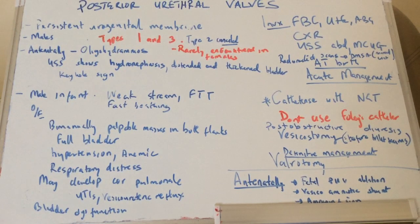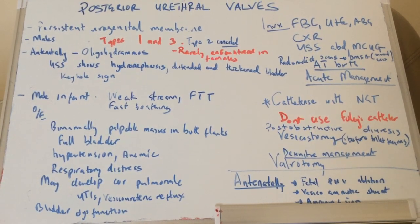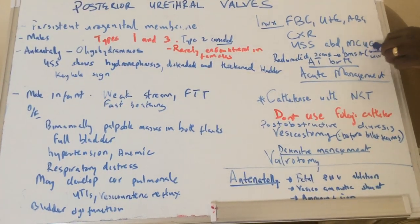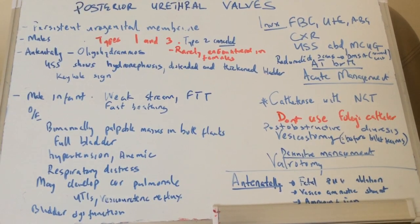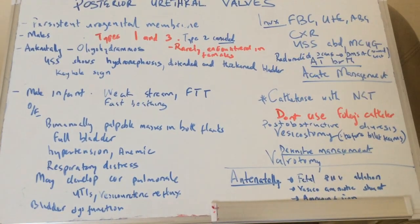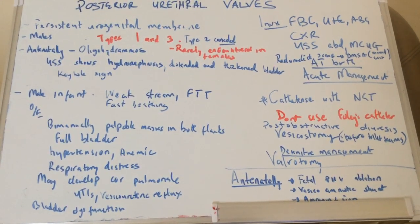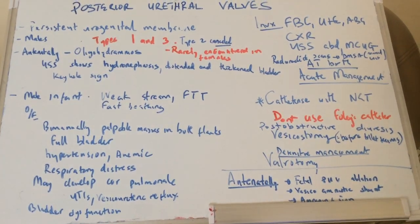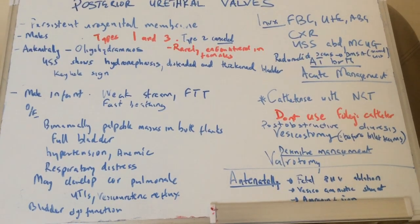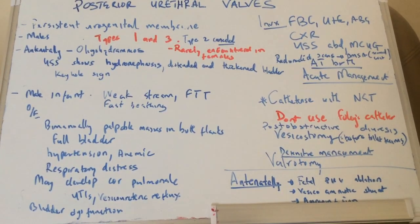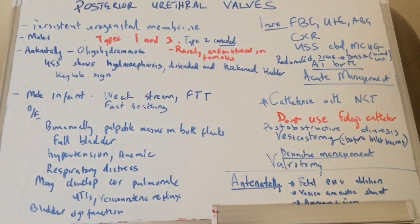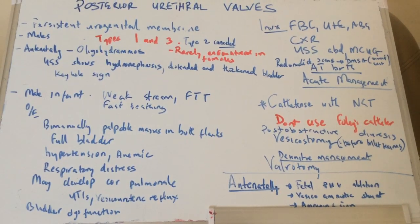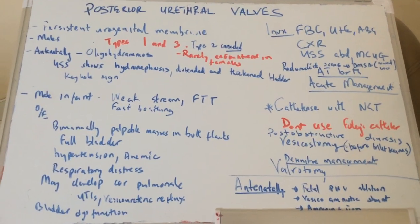Ultrasound of the abdomen can help visualize the hydronephrosis and check cortical thickness and other findings with the kidneys. But the definitive diagnosis requires a micturating cystourethrogram (MCUG). Other studies such as radionuclide scans — MAG3 or DMSA — can be done, but the problem is you need the patient first to have a normal creatinine to perform those studies. So most likely you will only be able to do an MCUG, as radionuclide studies may be contraindicated in patients with renal disease.